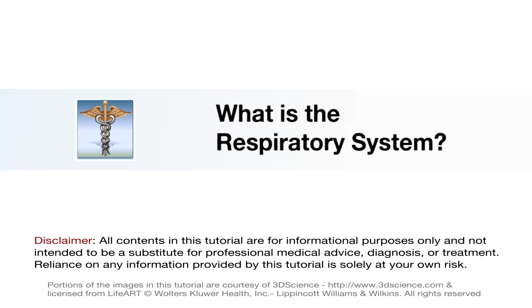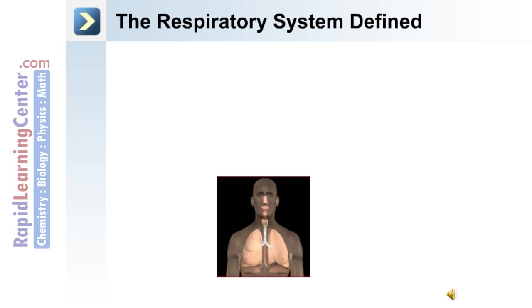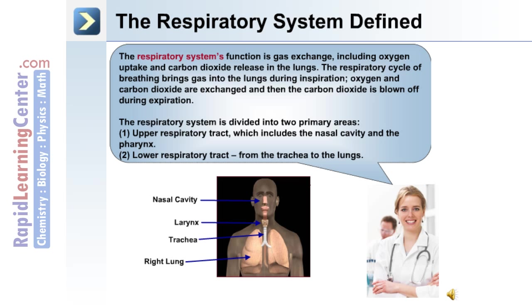Let's begin with an overview of the respiratory system. This image depicts the major components: the nasal cavity where inspired air enters the body, the larynx, the trachea or windpipe, and the lungs. The respiratory system's function is gas exchange, including oxygen uptake and carbon dioxide release. The respiratory cycle of breathing brings gas into the lungs during inspiration, oxygen and carbon dioxide are exchanged, and carbon dioxide is blown off during expiration.